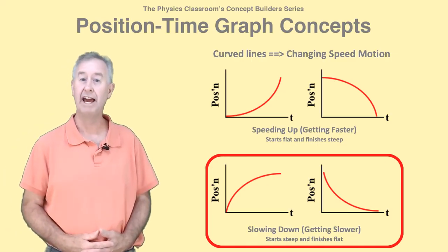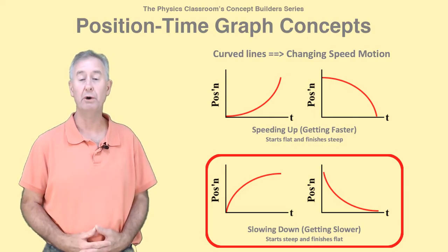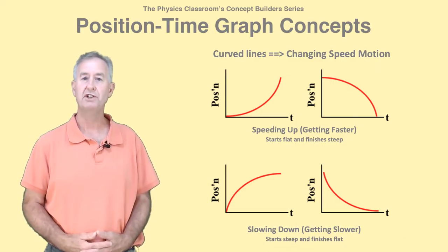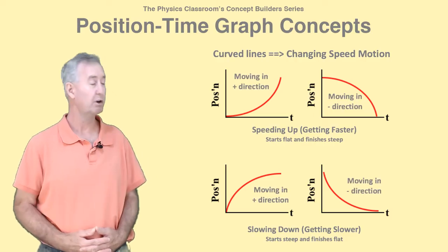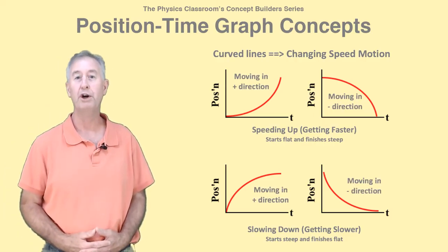The other two PT graphs have lines that start steep and get flat over the course of time. This represents a getting slower or slowing down motion. Just like for straight diagonal lines, curved lines indicate the direction of motion by either an upward or a downward slope.